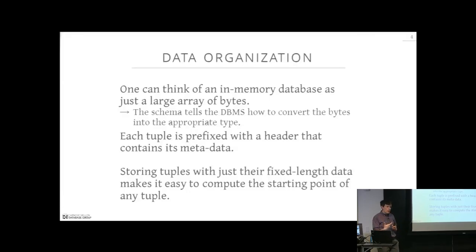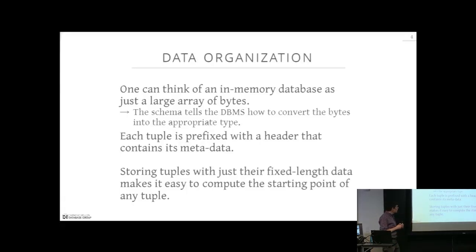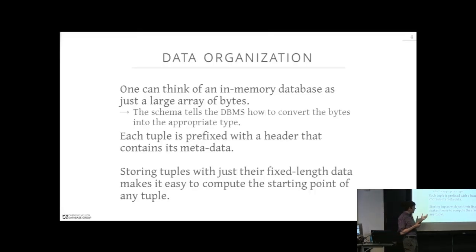We saw this when we talked about the hackathon version of MVCC, where they stored the begin timestamp, end timestamp, and a pointer to the next tuple in the version chain. Sometimes there are flags indicating whether a tuple is dirty. Every tuple allocates some space in the fixed-length tuple block — a little portion for the header — and then lays out sequentially the data for all attributes.